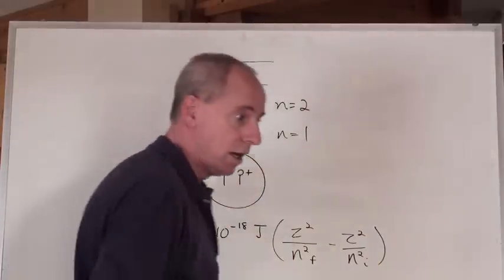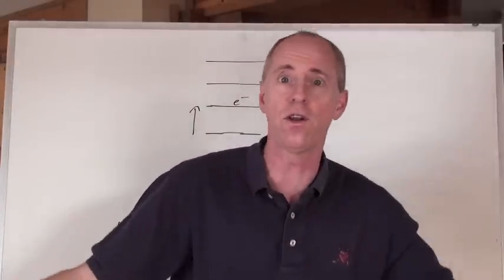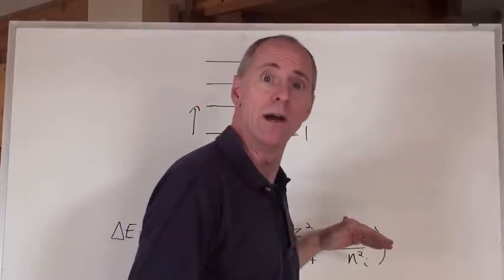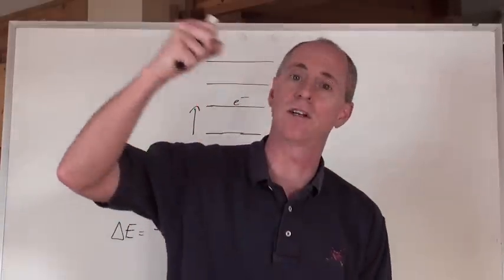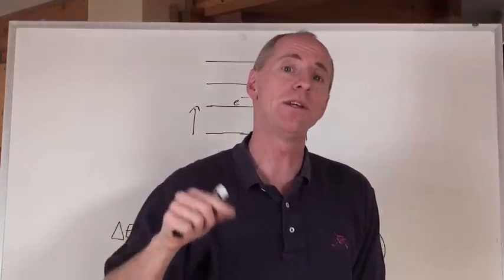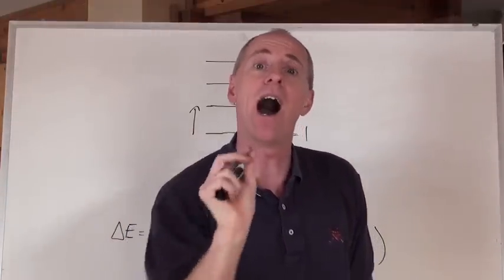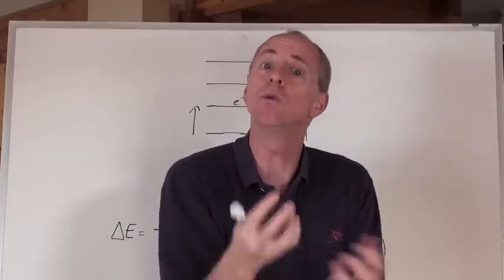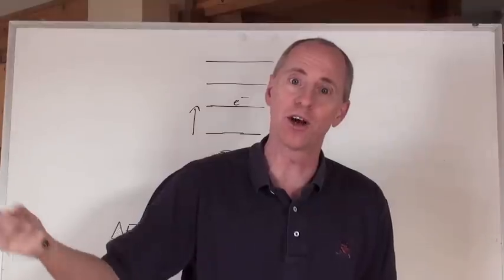Or from n equals 1 to n equals 10,643. All of those are pretty cool calculations that you could do until you actually remove the electron entirely from the atom, and that's moving it to n equals infinity. And that's when we call the atom ionized, or turning that atom into an ion now, because we remove an electron.